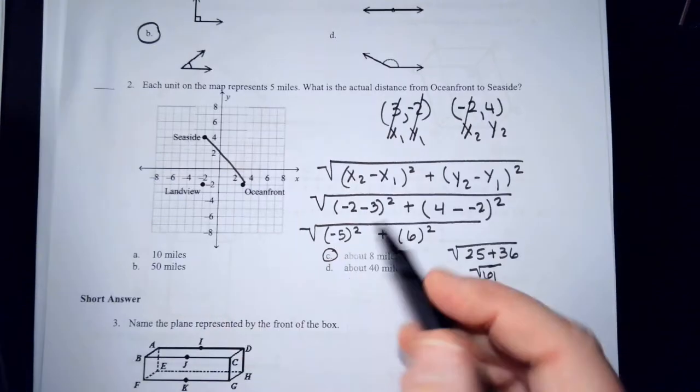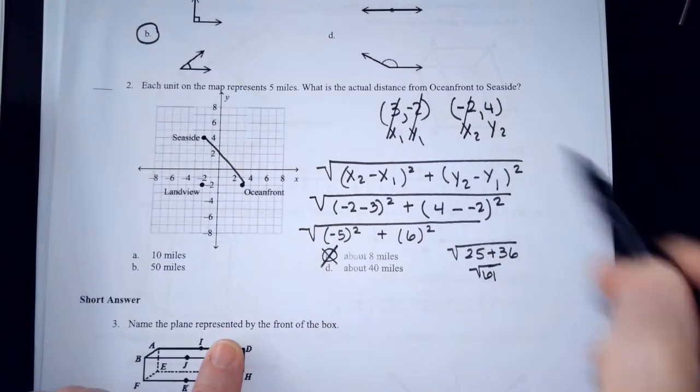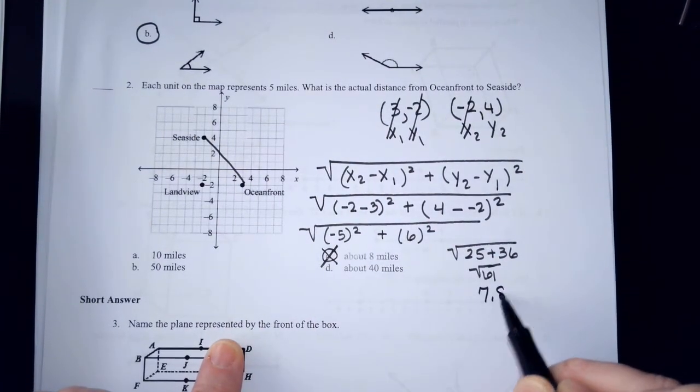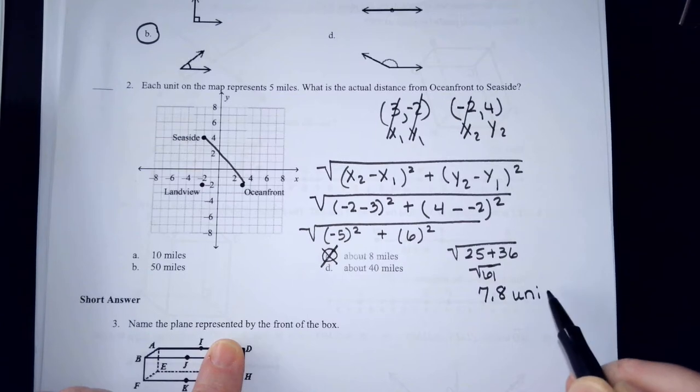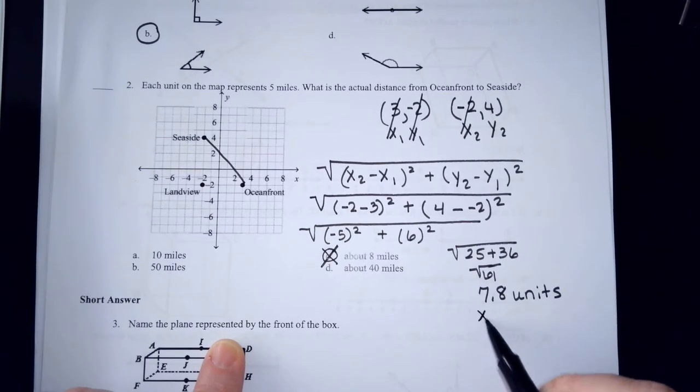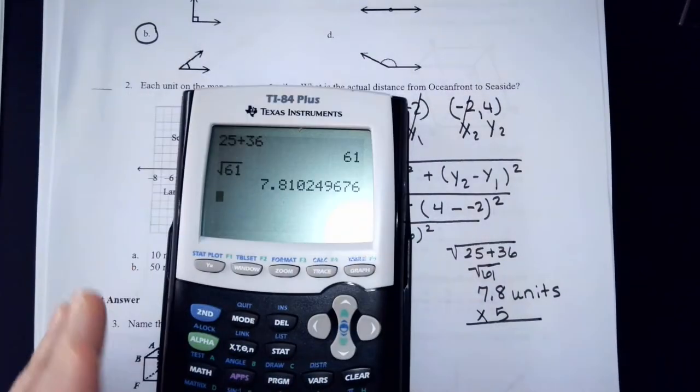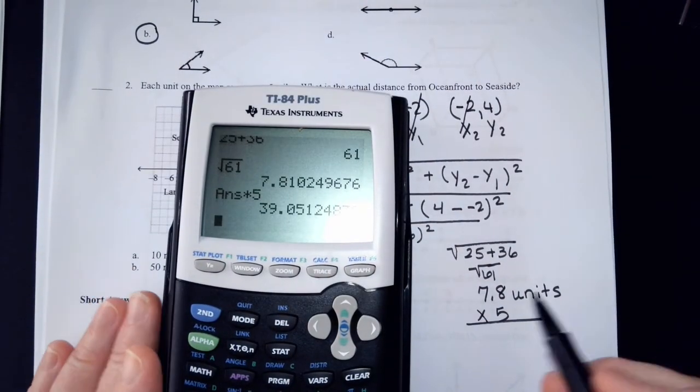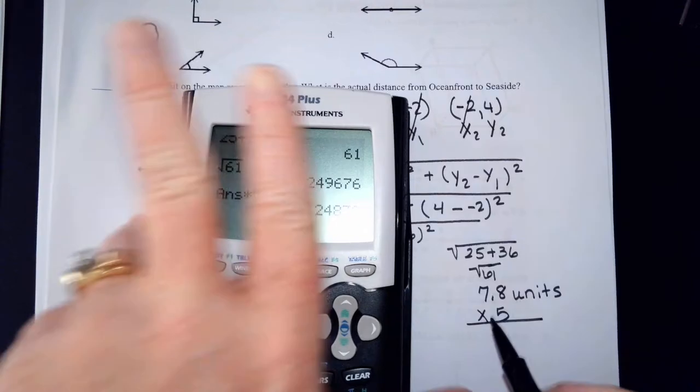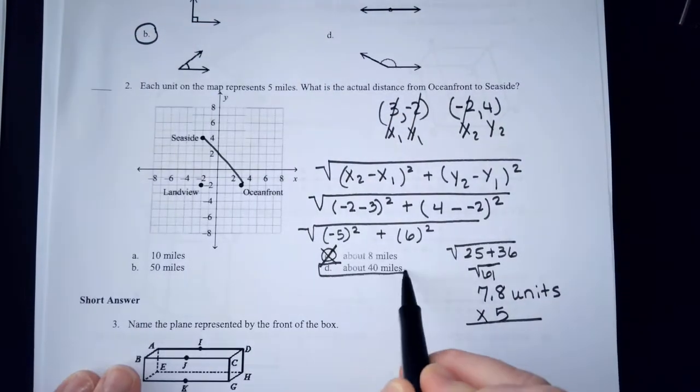They want an approximate answer for that. 7.8, and the closest answer here is C, about 8. Oh, oh, oh, see, I made a mistake. I was checking to see if y'all were paying attention. 7.8 units, and each unit is 5. So that's going to be close to 40, 39, which the best answer here is 40.